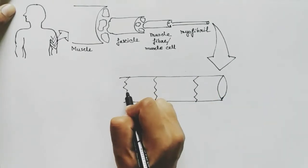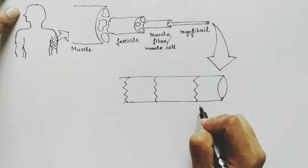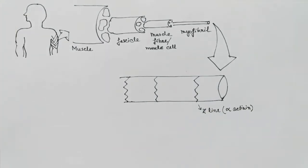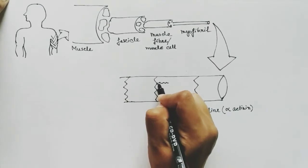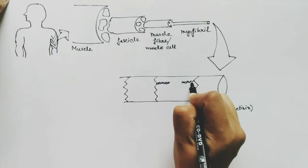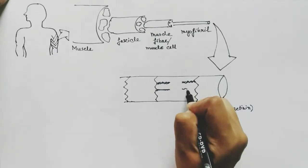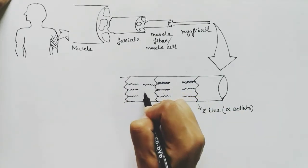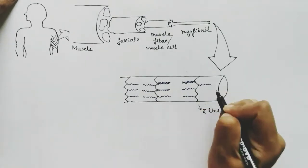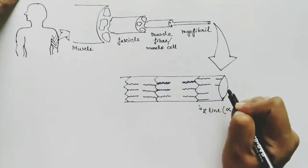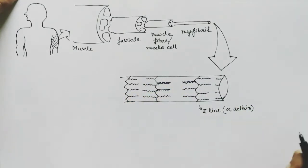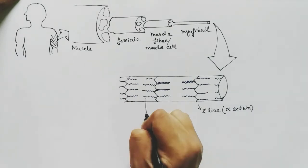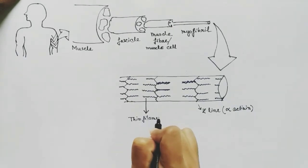If we zoom into one myofibril, we can see the inner structure. The myofibril contains different types of protein structures. These are the Z-lines, which are made up of alpha-actinin protein. Between two Z-lines, the region is called the sarcomere — the sarcomere is the unit of striated muscles, and it repeats throughout the myofibril. These are the thin filaments, made up of actin proteins, present in every sarcomere.